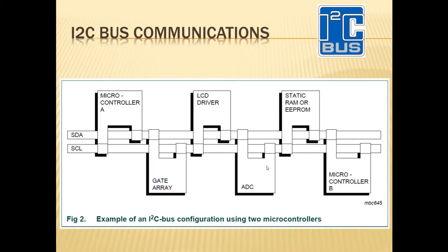Now we look at the general block diagram of how to connect devices on the I2C bus. We can see there are only two wires — SCL and SDA — for data and clock, shared across the entire network. We have a master, assumed to be the microcontroller, and here we have master one and master two. I took this picture from the I2C datasheet, which is available online and will be linked in the video description.